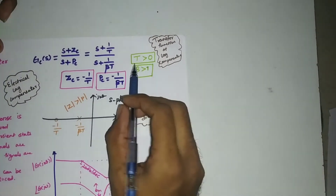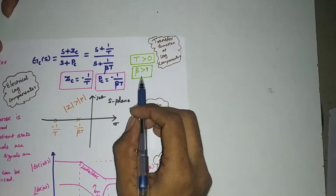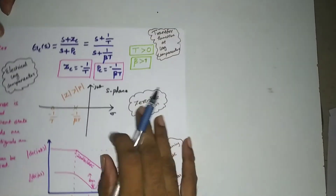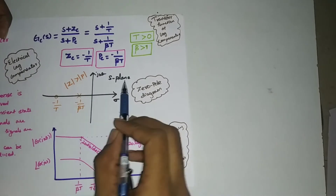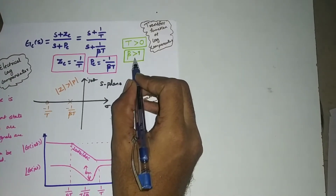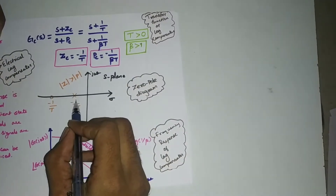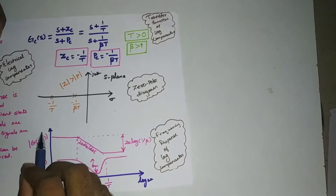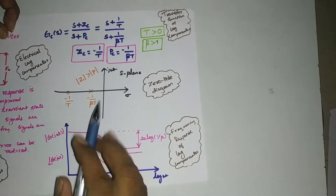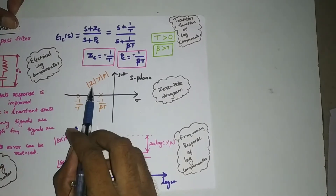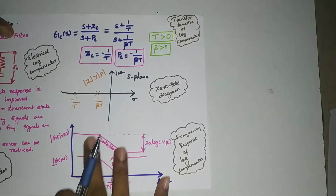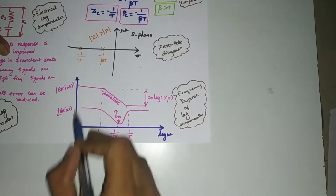Beta is the parameter deciding the values of R1, R2, and C. T should be greater than zero and beta should be greater than one — you need to memorize these. The zero Zc is minus 1/T and the pole Pc is minus 1/βT. In the zero-pole diagram, since beta is greater than one, the pole will be present in front of the zero — meaning zeros of the lag compensator are greater than the poles.